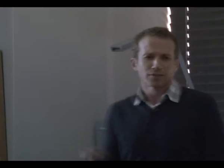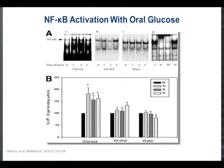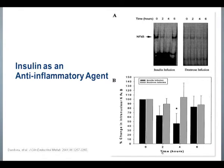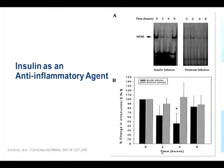Do we have good evidence for this? This slide shows NF-kappa-B, an inflammatory marker. If you give a patient glucose, you raise the NF-kappa-B levels. Similarly, insulin is an anti-inflammatory agent. If you give a patient a dextrose infusion, you increase NF-kappa-B levels, but if you give them insulin, you drop it markedly. So insulin is good for inflammation.